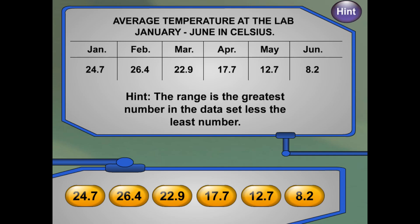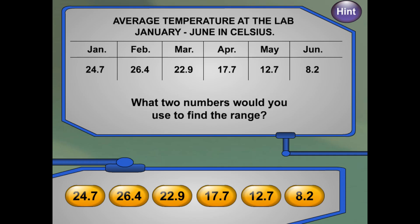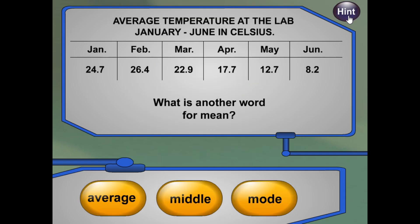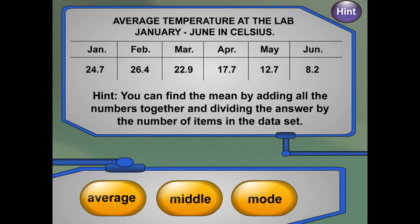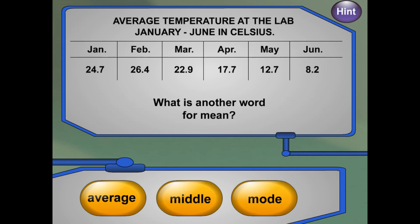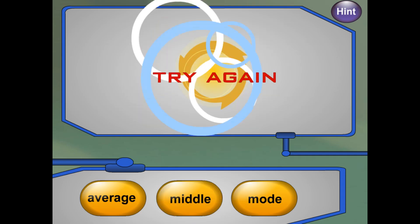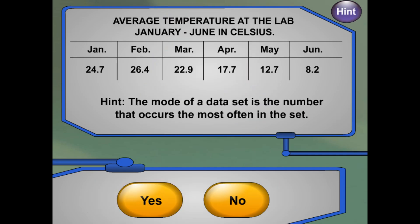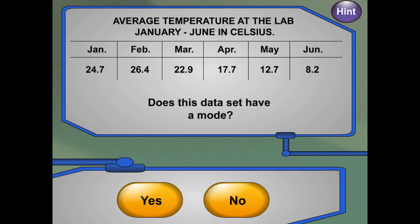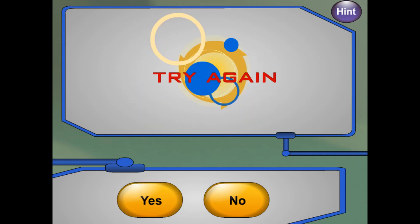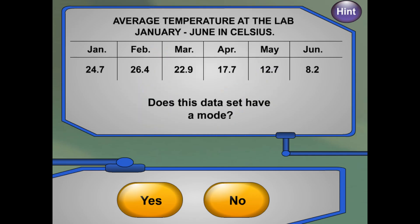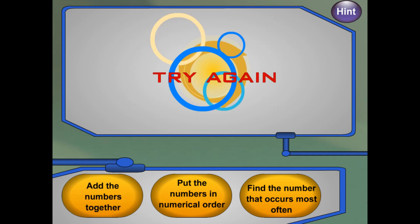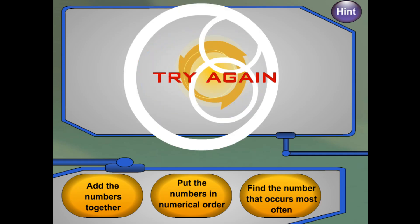The range is the greatest number in the data set, less the least number. You can find the mean by adding all the numbers together and dividing the answer by the number of items in the data set. The mode of a data set is the number that occurs the most often in the set. The median is the middle number in a set of data when the numbers are written in order.